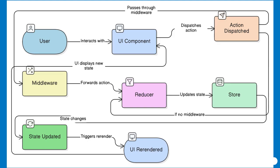Redux steps in as the centralized post office. All important messages — actions — are sent to and processed by this post office, which then updates the master city ledger, the store, and delivers news to all buildings that need to know. This centralized approach brings predictability. Everyone knows where to send and find information, reducing confusion and preventing state from diverging.